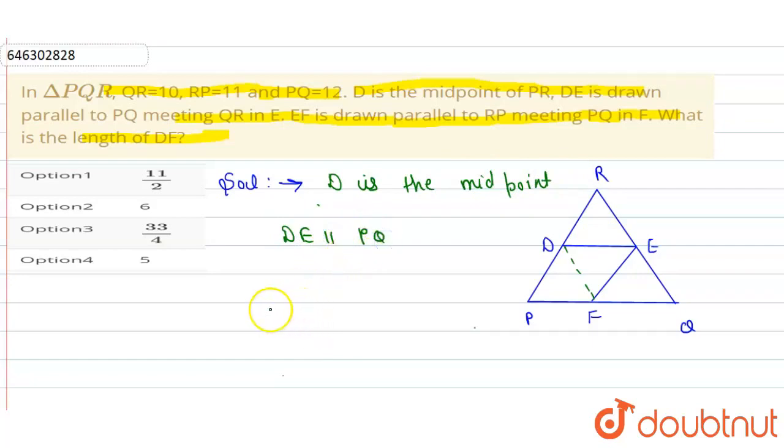By the midpoint theorem, since D is the midpoint and DE is parallel to QR, DE equals 1 by 2 of QR. This is our midpoint theorem.